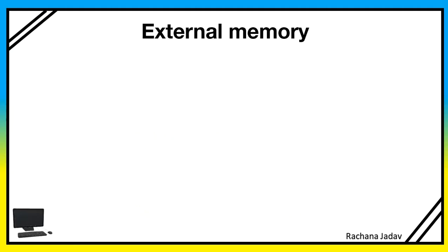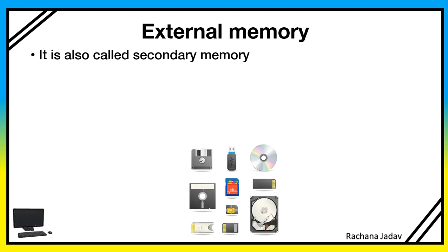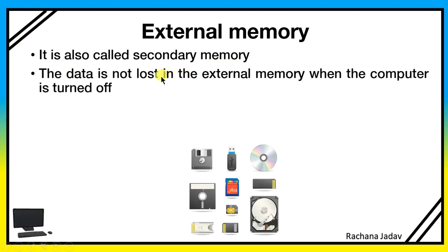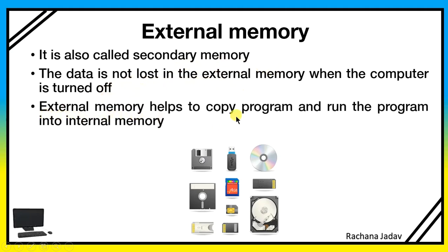External memory is also called secondary memory. The data is not lost in external memory — jabke internal mein aapne dekha ki turn off karne par woh erase ho jaata hai. External memory helps to copy programs and run them into internal memory. Yaane aap koi program install karna chahte ho ya chalana chahte ho, toh external se copy karke internal mein run hota hai.